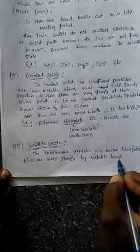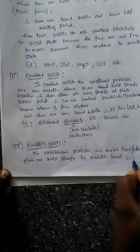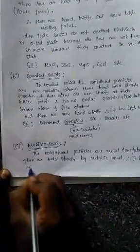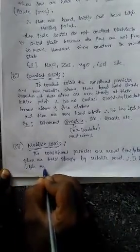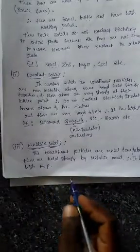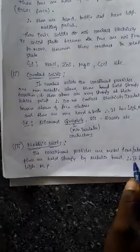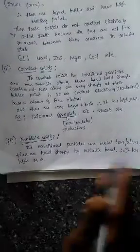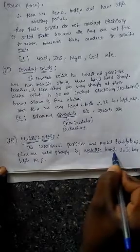The metallic bond is a very strong bond. Therefore, metallic solids have a very high melting point, due to the presence of the strong metallic bond.